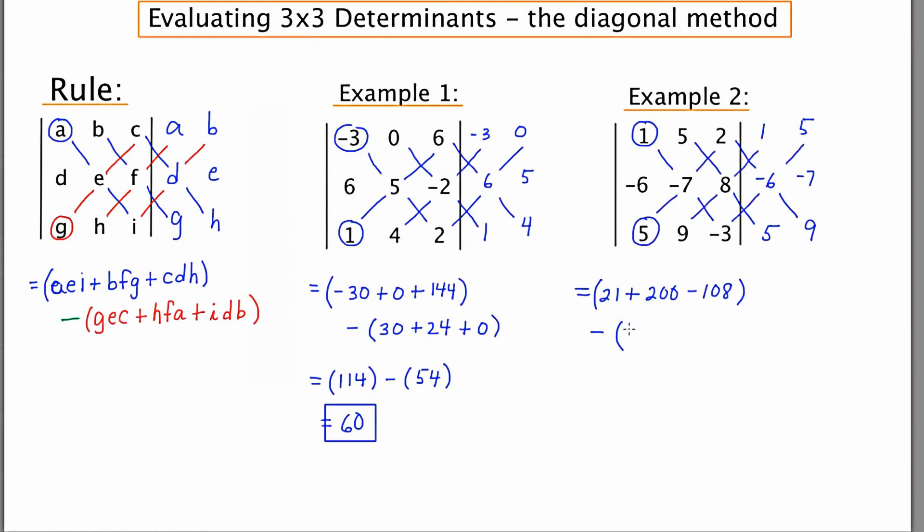The upward diagonals, negative 70, 72, and 90.